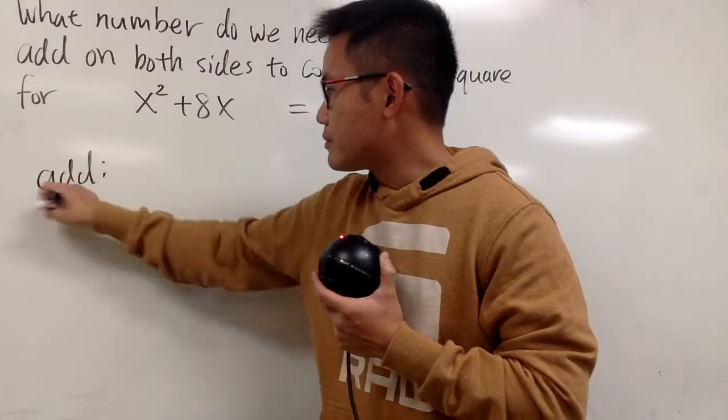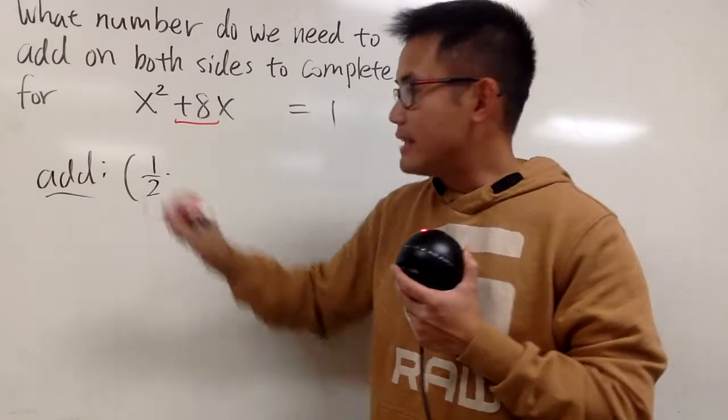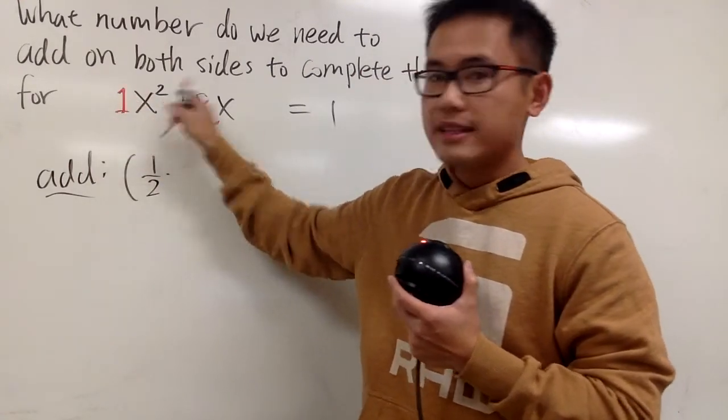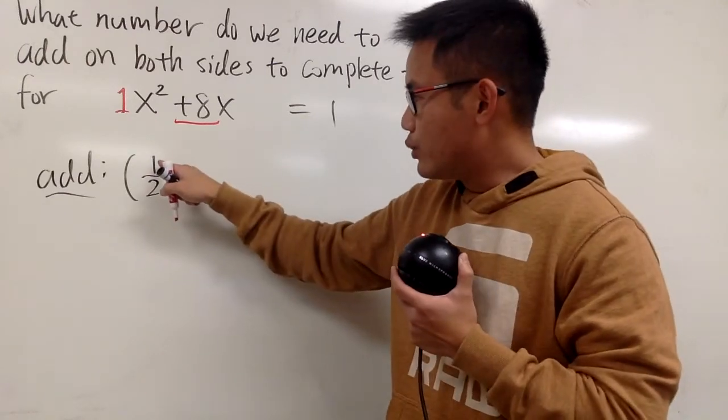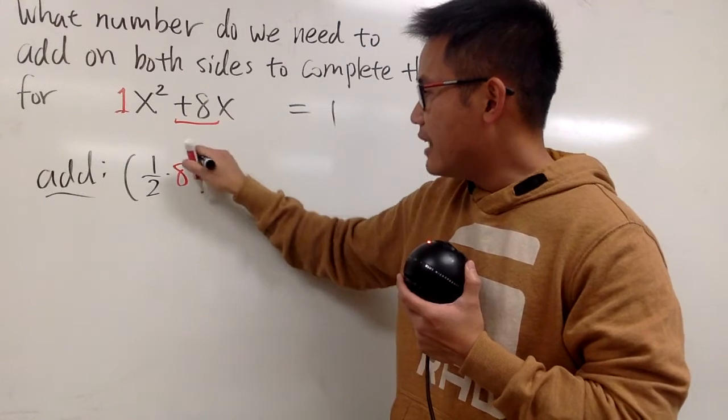We have to add 1 half times whichever this number is. And notice that we have a 1 in front of the x squared already. So we just need to do 1 half times this number, which is 8, and then square.